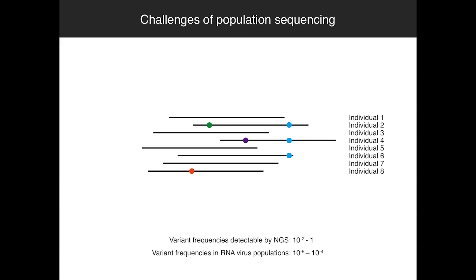Because of this, the limit of detection for genetic variants from populations is fixed by the error rate of your sequencing platform. We use Illumina sequencing — that's the most common platform — and there you can't really identify any frequency below about 1%. For RNA viruses, which have some of the highest mutation rates and most diverse populations, we expect most mutations to be between 10⁻⁶ and 10⁻⁴ in frequency.